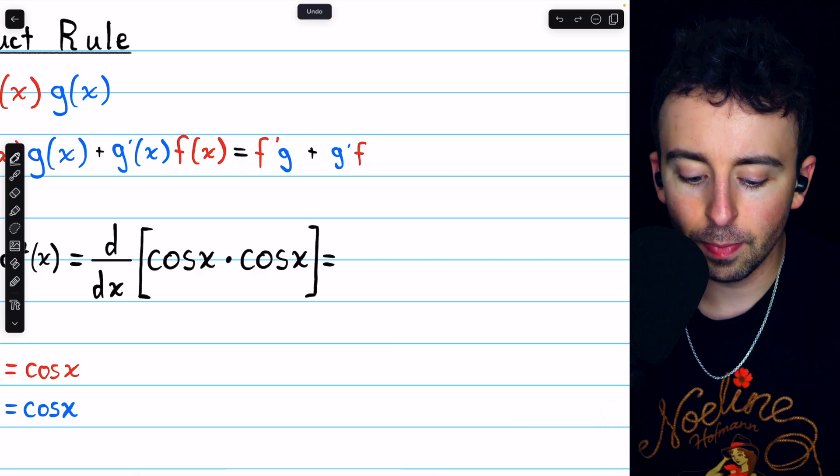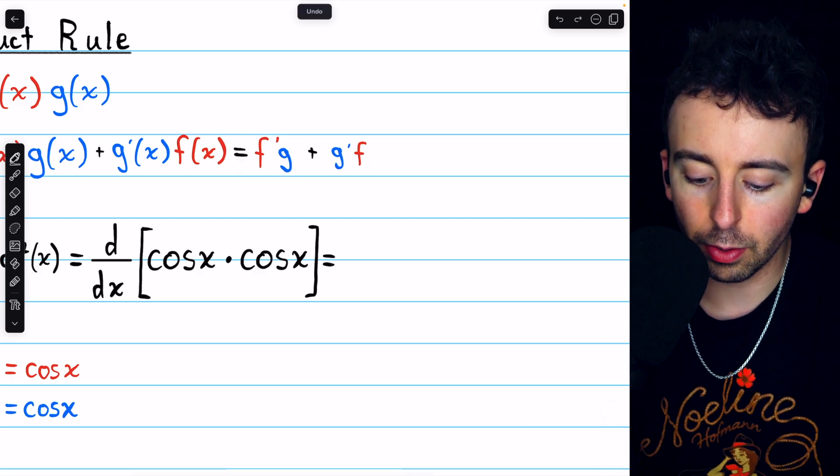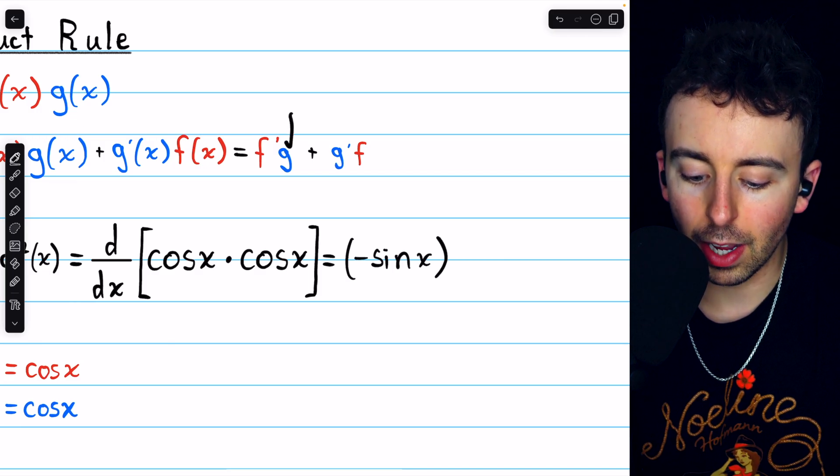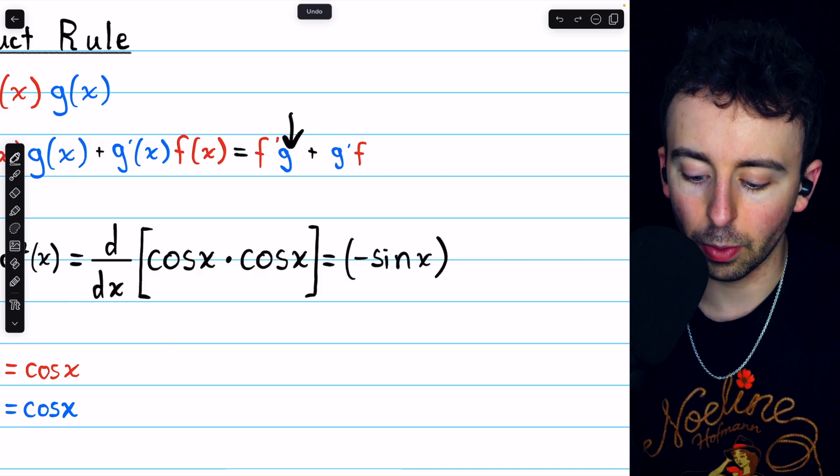Let's begin with f prime g. That's the derivative of the first function—the derivative of cosine, which is negative sine x—multiplied by g, the second function, cosine x.